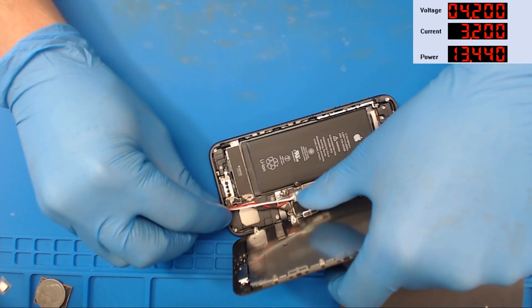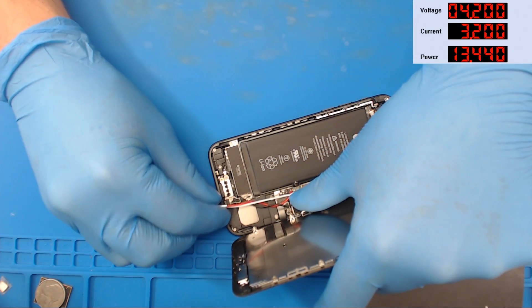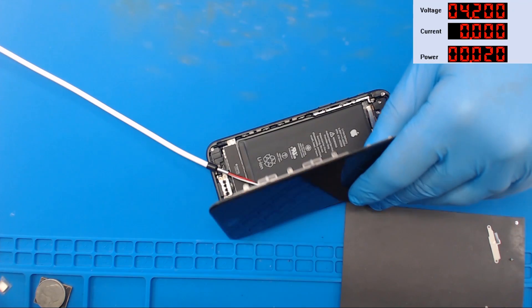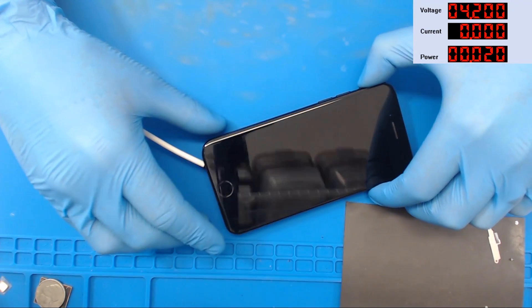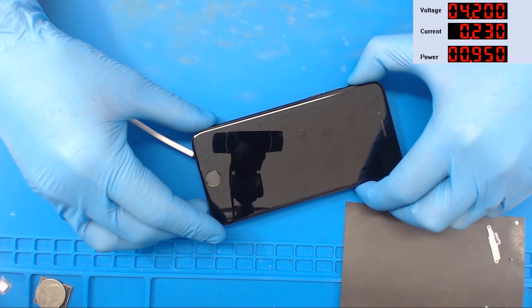As with any current consumption measurements while the phones are booting, it needs to be done through the battery connector. So here we have connected our power supply to this iPhone 7 and we're going to press the power button. Power button one, two, three.